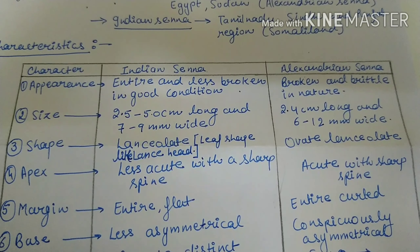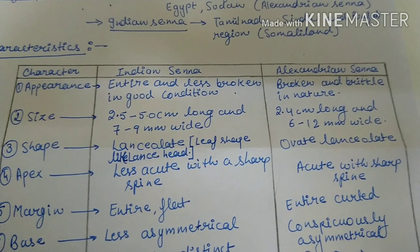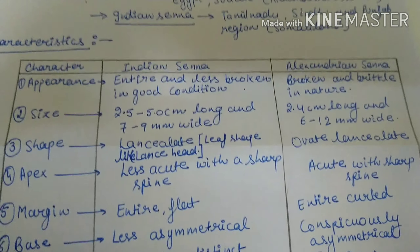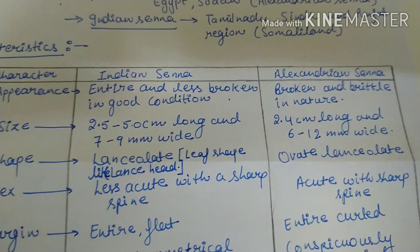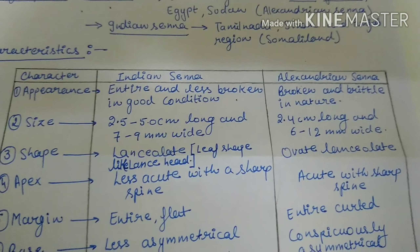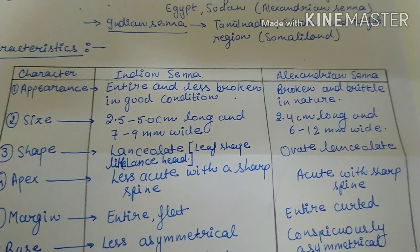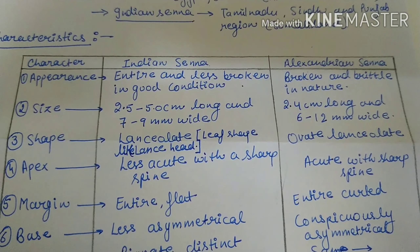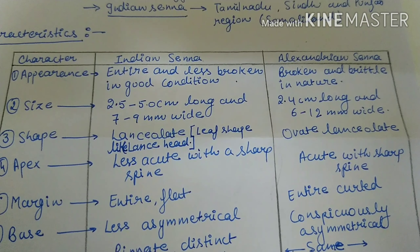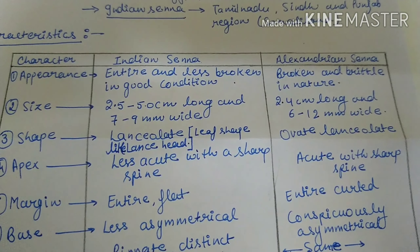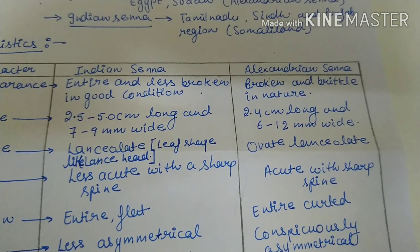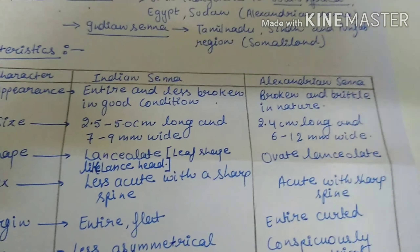Now I am discussing the distinguishing characters of Indian Senna and Alexandrian Senna. Regarding appearance, Indian Senna is generally entire and less broken and in good condition, whereas Alexandrian Senna is broken and brittle. Regarding size, Indian Senna is 2.5 to 5 cm long and 7 to 9 mm wide, while Alexandrian Senna is 2.4 cm long and 6 to 12 mm wide.